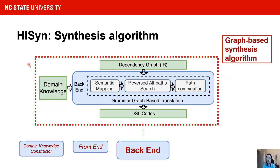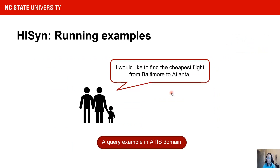The third feature of HySing is graph-based synthesis output. By taking the intermediate representation and domain knowledge as input and representing the grammar as a graph, the back-end of HySing maps key information in queries to the APIs in the graph, finds the paths to connect them, and gradually translates the natural language into the desired code expression. Now let's use an example from the air travel information system domain to illustrate this synthesis process. The query is: 'I would like to find the cheapest flight from Baltimore to Atlanta.'